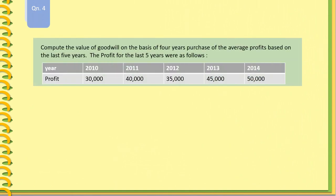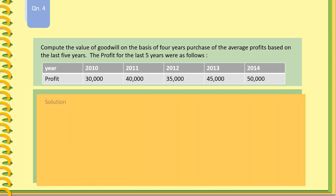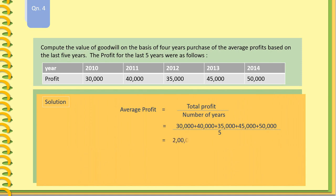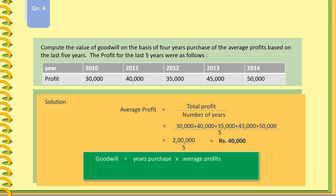Question 4: Compute the value of goodwill on the basis of 4 years purchase of the average profits based on the last 5 years. The average profit equals total profit divided by number of years: 30,000 plus 40,000 plus 35,000 plus 45,000 plus 50,000 divided by 5, giving 2,00,000 divided by 5 equals Rs. 40,000. Goodwill equals years of purchase into average profit: 4 into 40,000 equals Rs. 1,60,000.